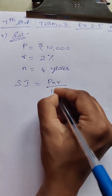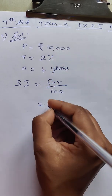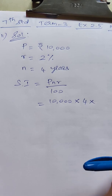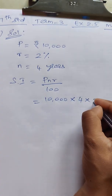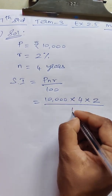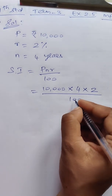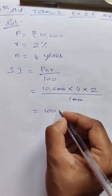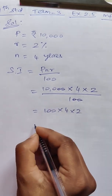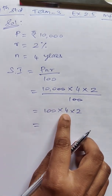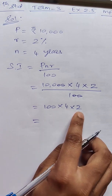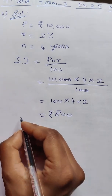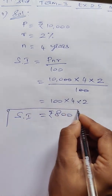P is 10,000, N is 4 years, R is 2%. Using SI = P×N×R/100: we cancel zeros — 100 into 4 into 2, which gives 400, and multiplying gives 800. So the interest earned is Rs. 800.